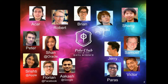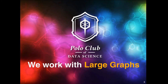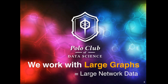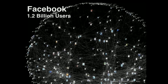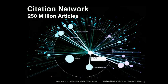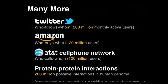We work with large graphs — a lot of people call it large network data. There are many examples: the internet is a 50 billion node graph where nodes are web pages and edges are links. Facebook is a 1.2 billion node graph where nodes are users and edges are friendships. In academia, citation networks have nodes as papers and edges as citations. On Twitter you have who follows whom, on Amazon a bipartite graph of who buys what, and also cell phone networks and biology protein interaction networks.